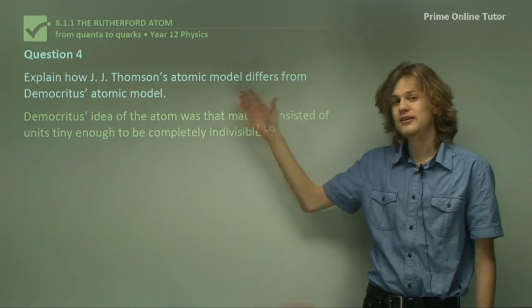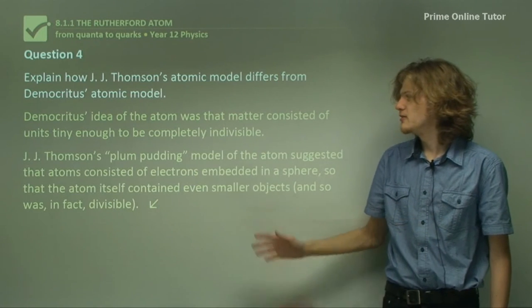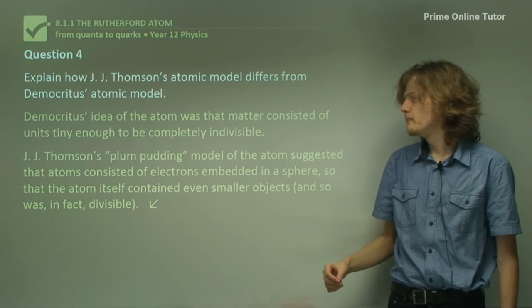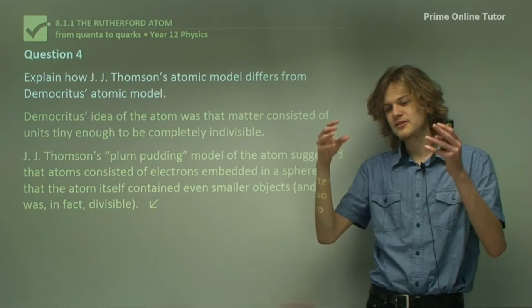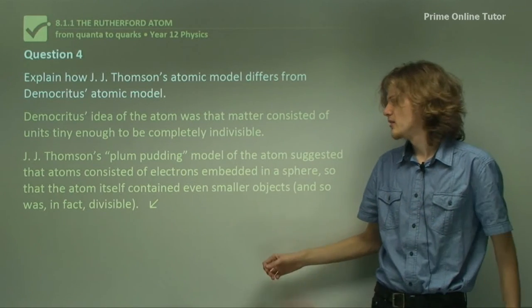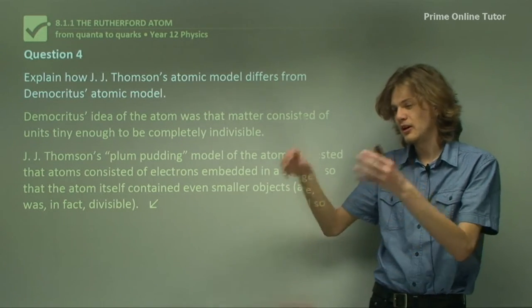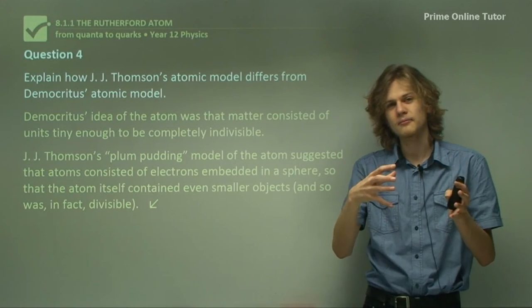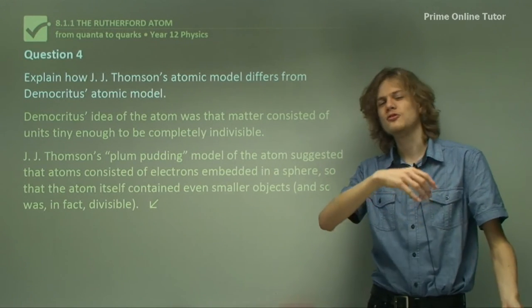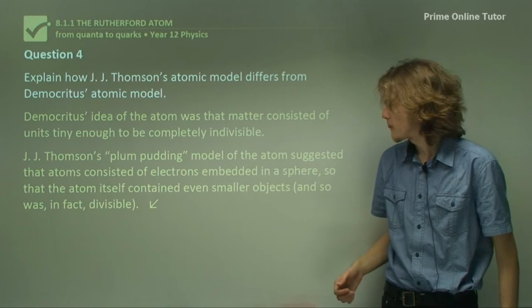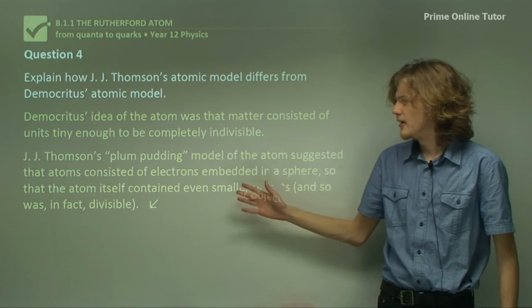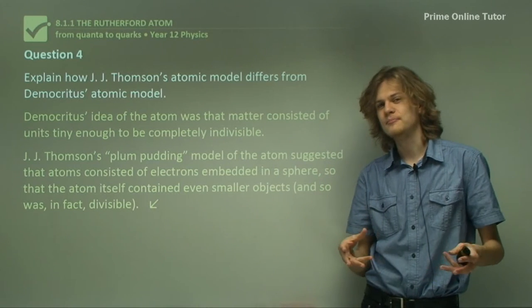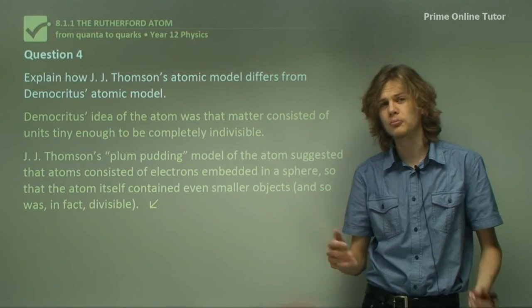So now we need to explain how it differs. We can say that J.J. Thompson's plum pudding model of the atom suggests that the atoms consist of subatomic parts. So in this case it would be electrons and a positively charged sphere. It has to be positively charged because the overall atom is neutral. So in Thompson's model, there are objects smaller than an atom, and the atom is not completely indivisible.